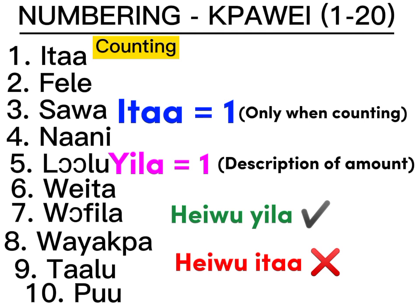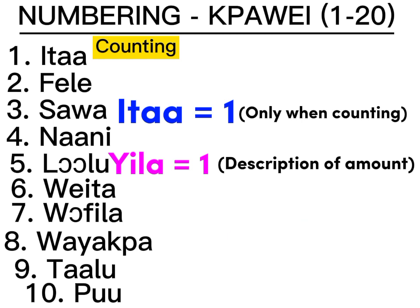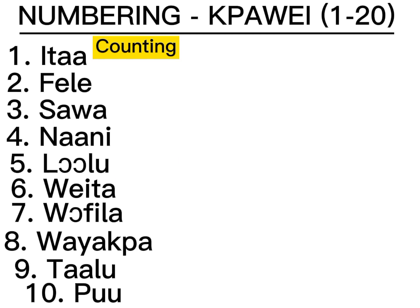But to give the description of the amount, you have to say Yila. And sometimes Yila is pronounced as Yila. For example: Numu Yila — one person. Salo Yila — one orange. We cannot say Salo Yita or Numu Yita. So, to recap, we have: Ita, Fele, Sawa, Nani, Lolu, Weita, Wafla, Wayakba, Talu, Puu.